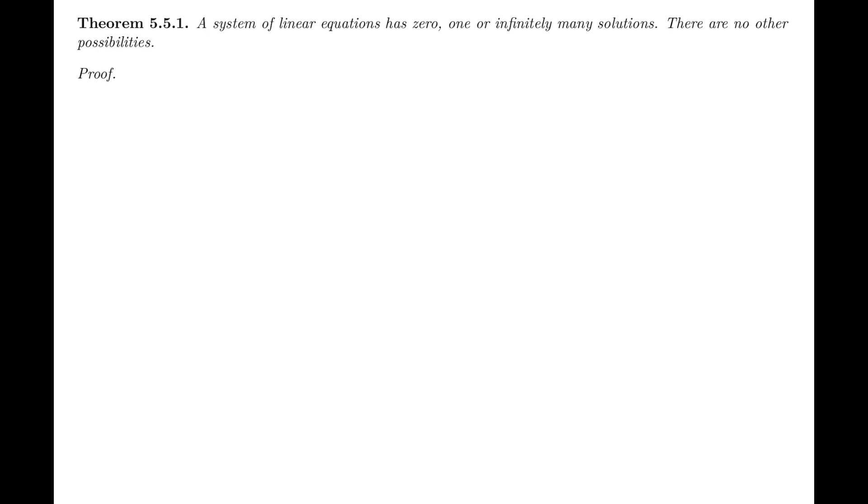However, how do we know that there aren't systems that have two solutions or 17 solutions? Now, we have a sufficient understanding of linear systems to be fairly confident that's not the case, that they can't have two solutions or 17, but now we have the notation and the terminology to prove this formally.